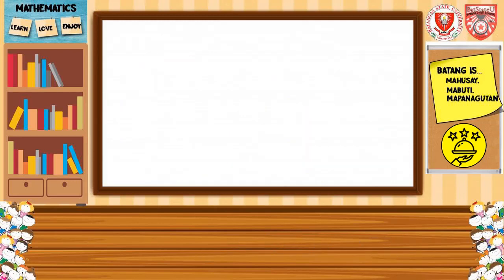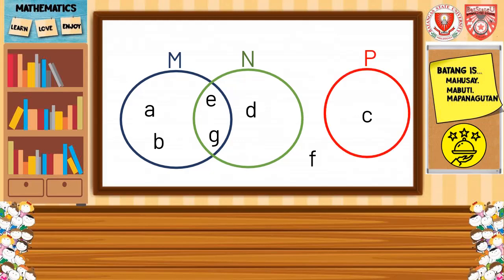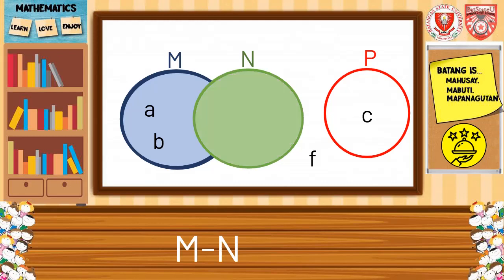Let us have another type of Venn diagram. We have the universal set {A, B, C, D, E, F, G}. Set M is {A, B, E, G}, set N is {D, E, G}, and set P is {C}. We're going to find M minus N. The elements in M are A, B, E, and G. We remove all elements in N, so the final answer — M minus N — is whatever is left in M, which is A and B.